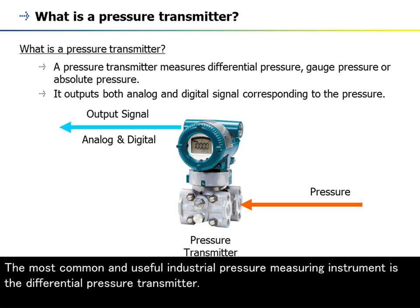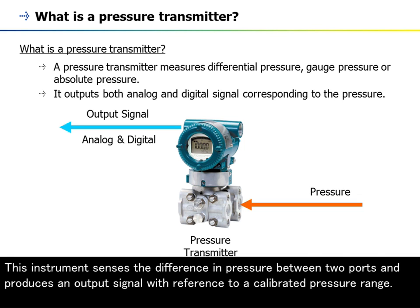The most common and useful industrial pressure measuring instrument is a differential pressure transmitter. This instrument senses the difference in pressure between two ports and produces an output signal with reference to a calibrated pressure range.